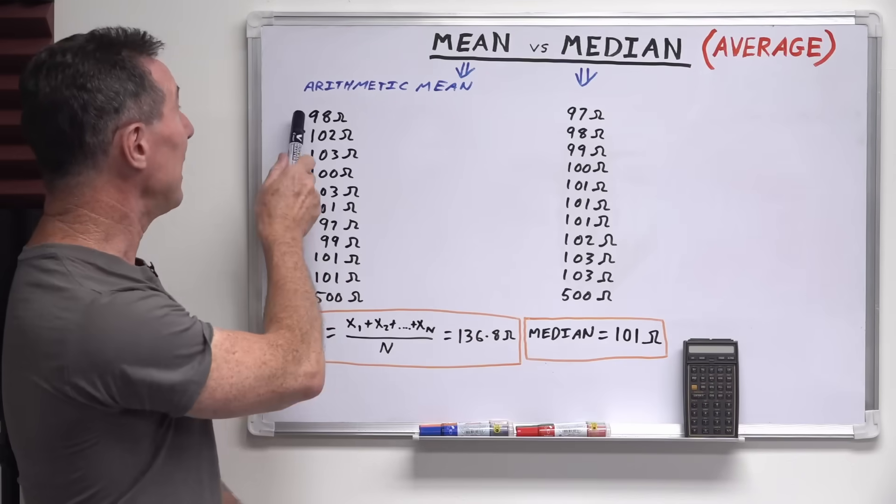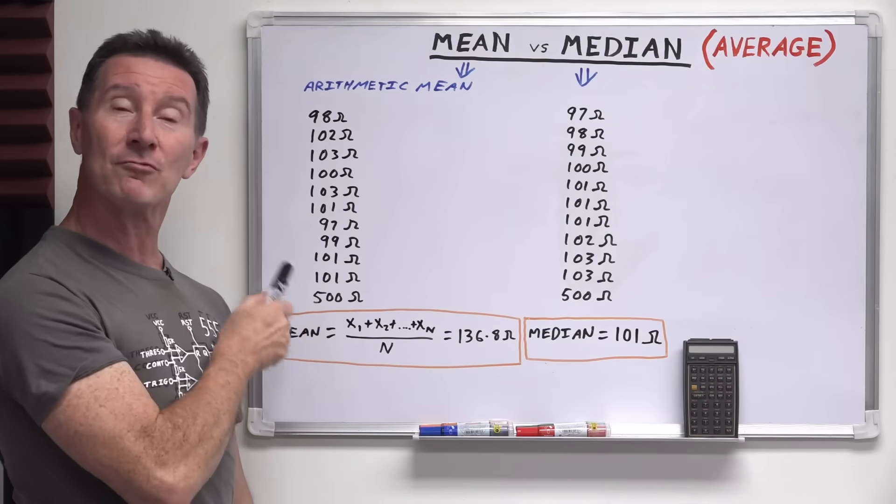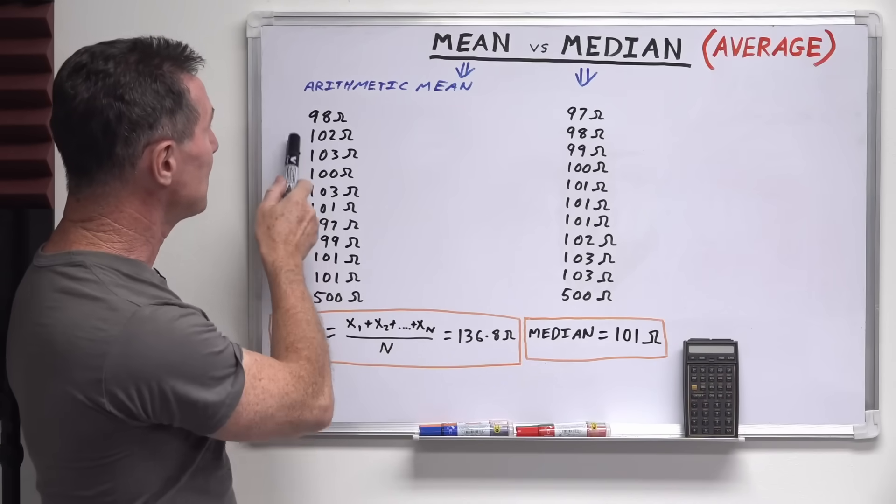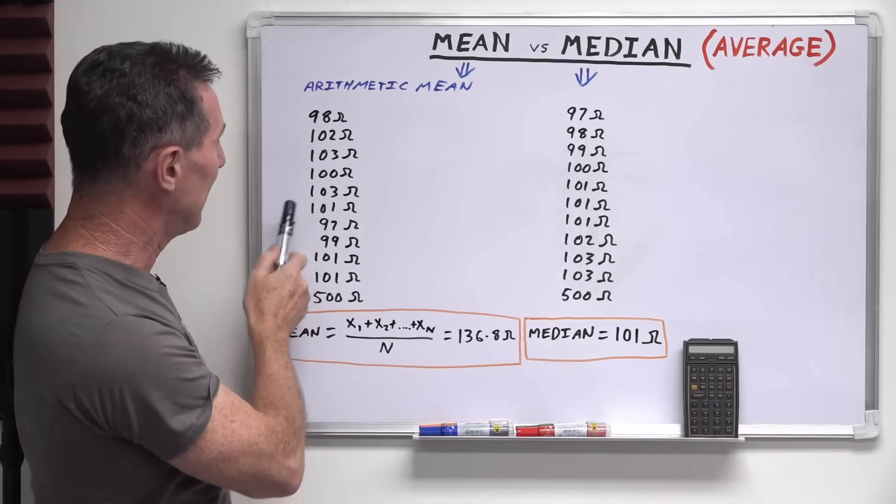Things can sound worse than they are. Things can sound better than they are. They can do that by simply using a different type of average. So we'll go through this example here. I'm measuring 11 different resistors, they're all supposed to be the same but there's some tolerance.